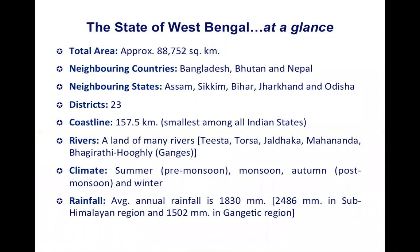Before discussing the biodiversity profile, let's have a look at the geography of the state. West Bengal is located on the eastern side of India. It's not a very large state, with a total area of 88,752 square kilometers. The state shares international boundaries with Nepal, Bhutan, and Bangladesh, while Assam, Sikkim, Jharkhand, Bihar, and Odisha are neighboring states. At present there are 23 districts in West Bengal, and the coastline is around 157.5 kilometers.